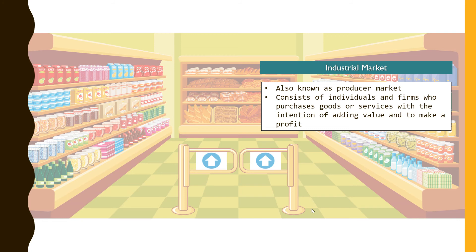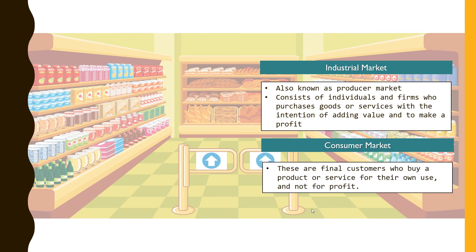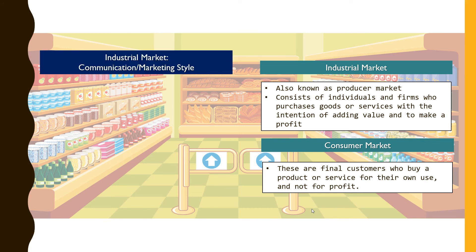That's an example of an industrial market. We also look at consumer market — consumer market refers to people who buy products and services for their own use. They buy them from the industrial market for their own use and not for profit. This refers to people like you and I.